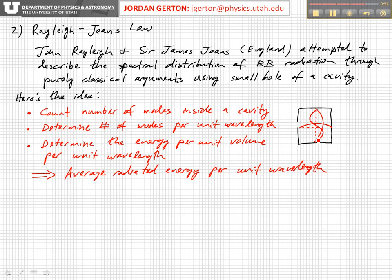They can basically count up the number of modes that can exist inside the cavity, figure out how many of a given wavelength are present — for example, the lowest order one that has just half a wavelength — and then divide by the volume of the cavity to get the number, and assign an energy for each one of those modes. That's the critical thing: assigning an energy for each mode. Then they can determine the energy per unit volume per unit wavelength, and from that, the average radiated energy per unit wavelength, which gives the spectrum. They wanted to compare that to the peaked spectrum that we've seen several times.